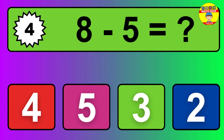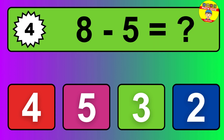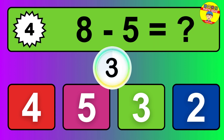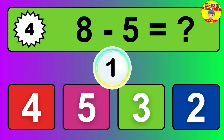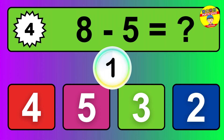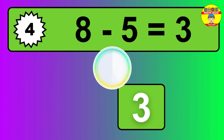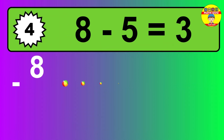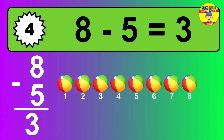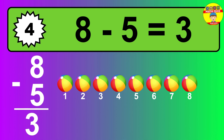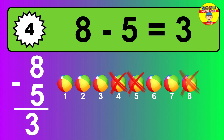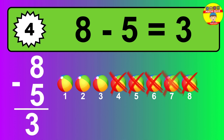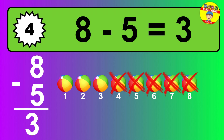Question 4. 8 minus 5 equals what? The answer is 8 minus 5 is 3. Let's count it: 1, 2, 3.